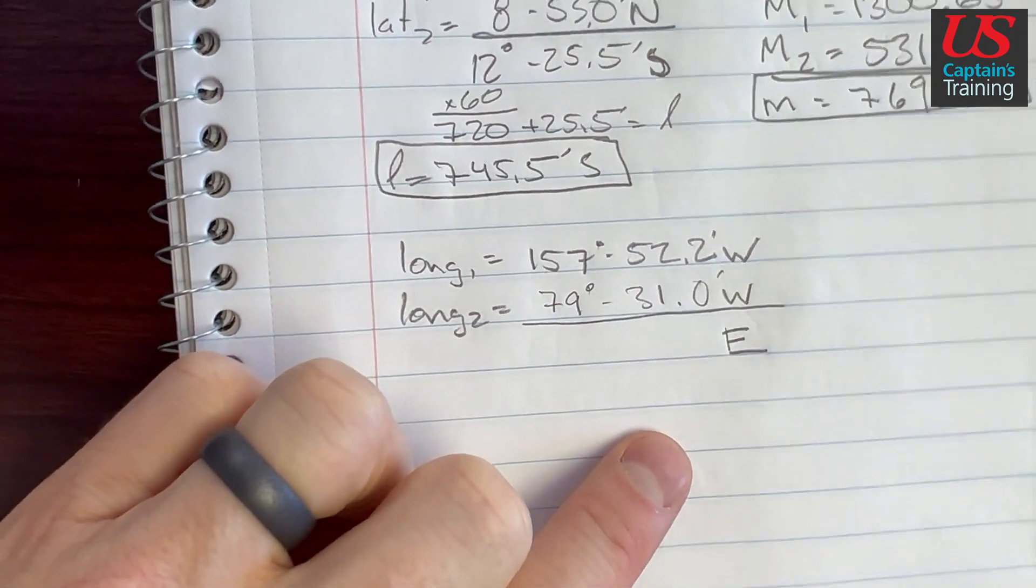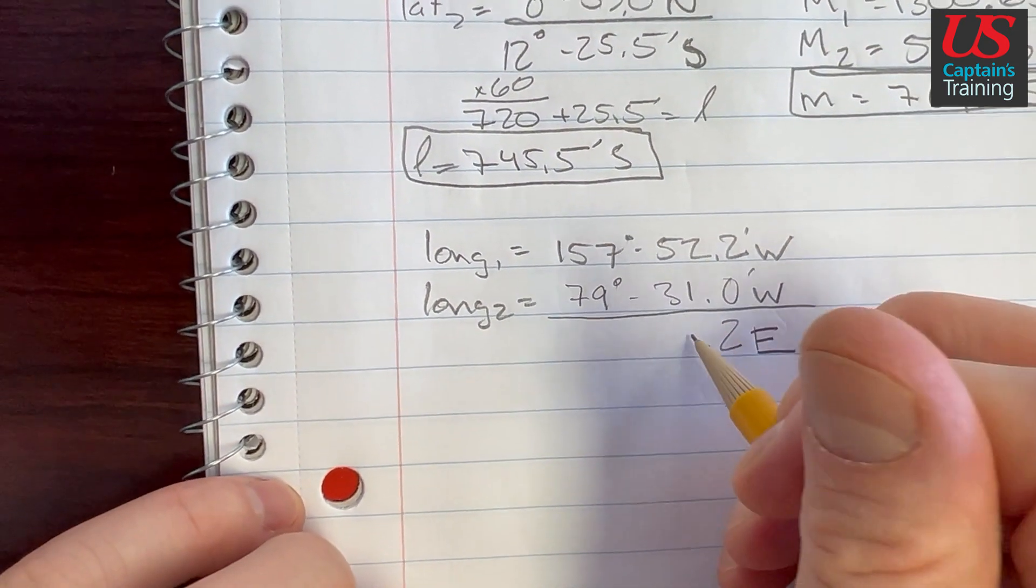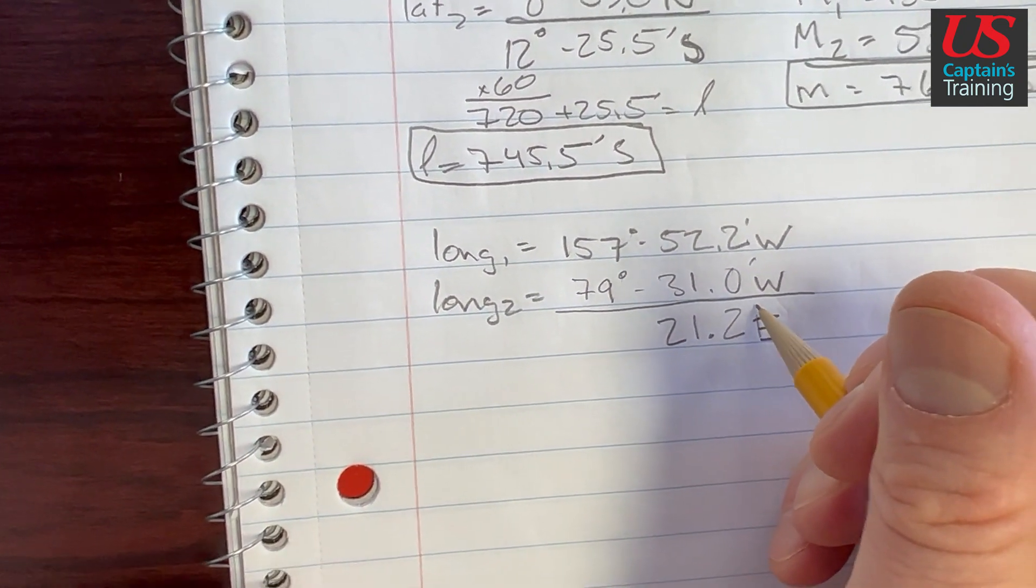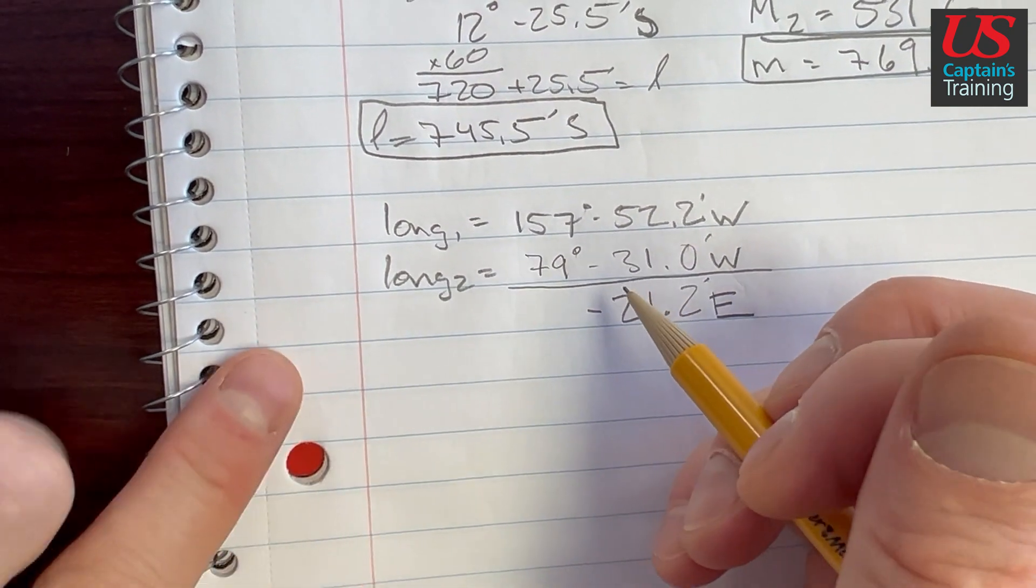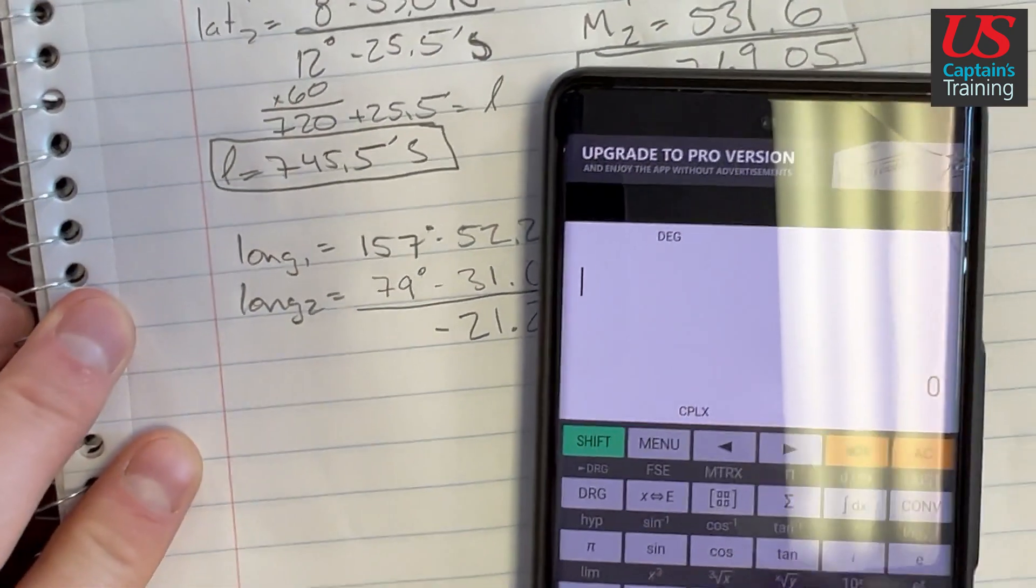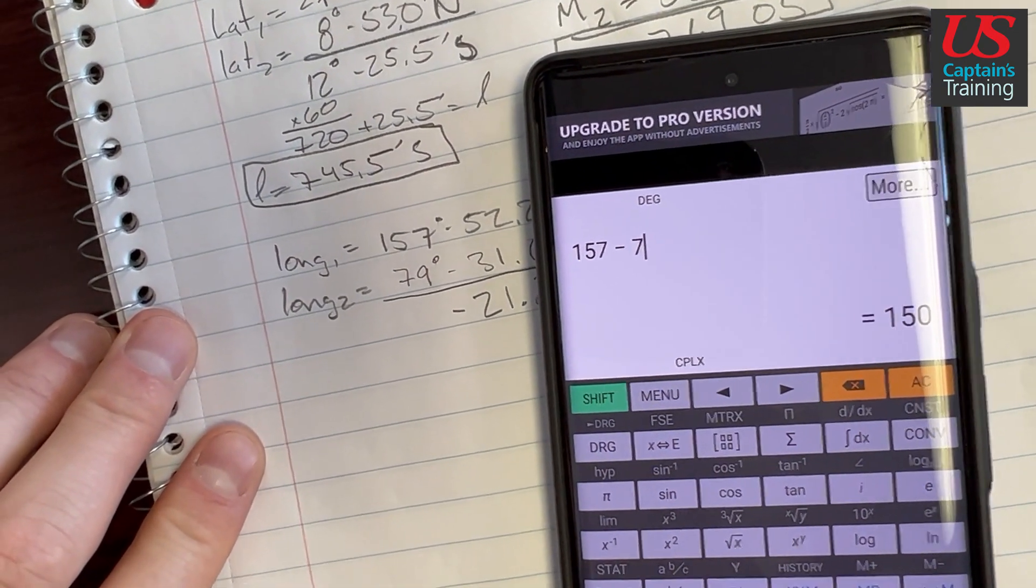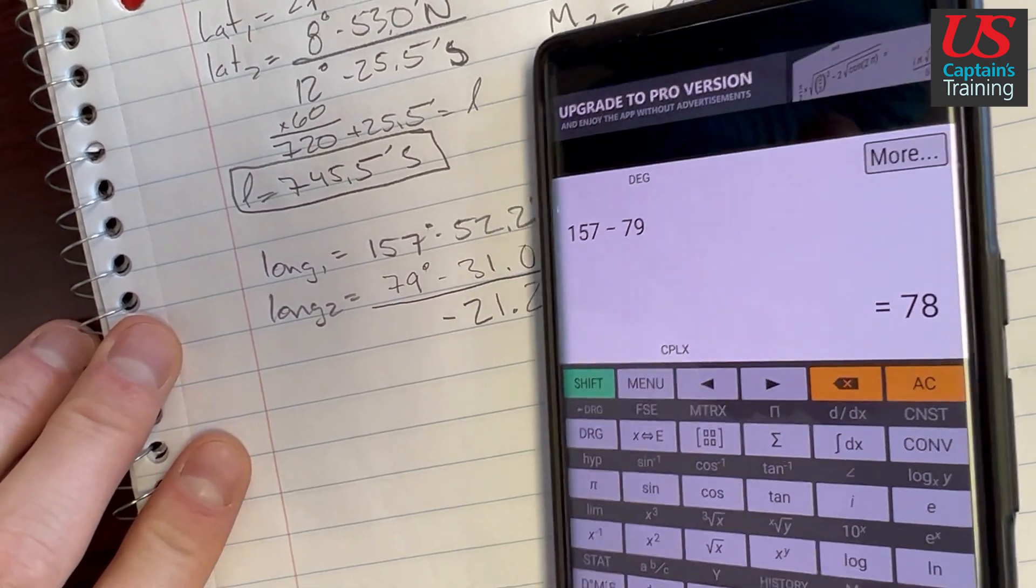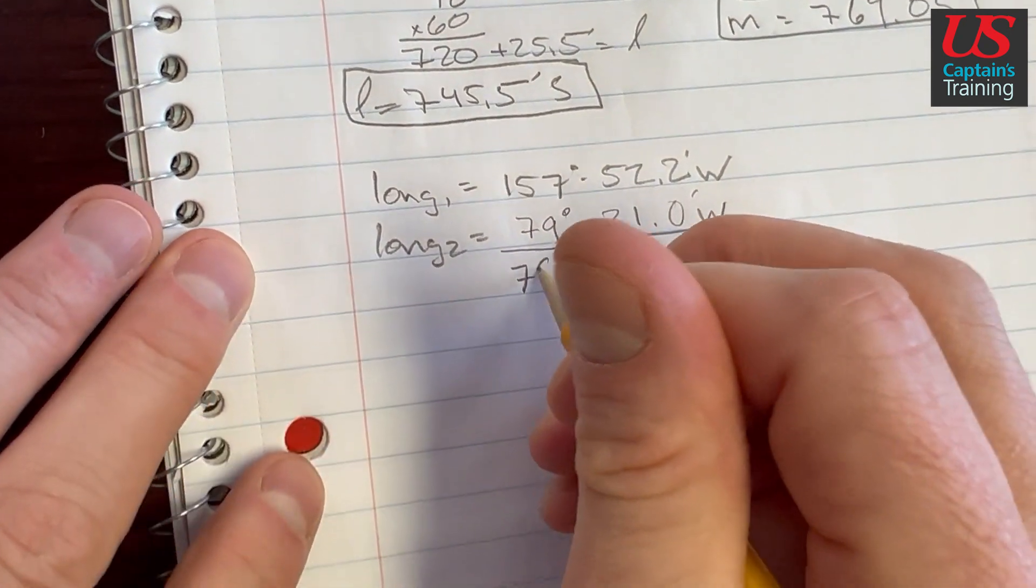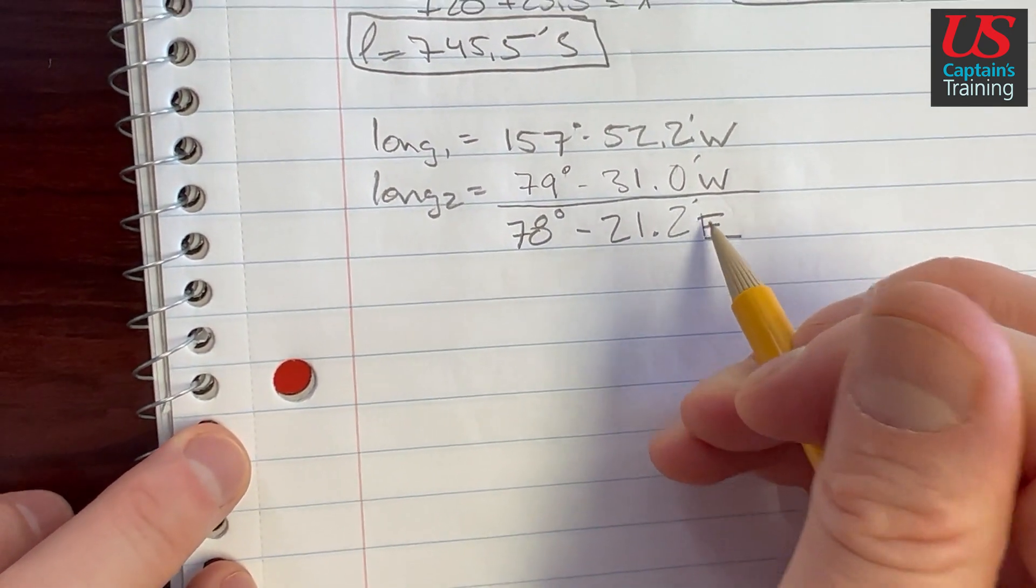So 52, this is an easy one. 2 minus 1 is 1, 5 minus 3 is 2, 21.2 minutes. And now let's do this one on the calculator. 157 minus 79 equals 78 degrees, 78 degrees 21.2 minutes east.